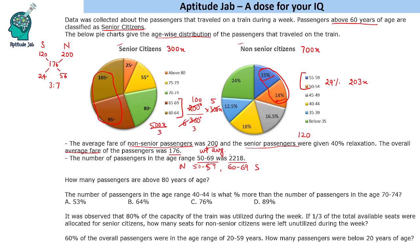The total is 2218. Adding 203x and 500x/3: that gives (609x + 500x)/3 = 1109x/3 = 2218. Solving, x equals 6. So senior citizens total 1800 and non-senior citizens total 4200.